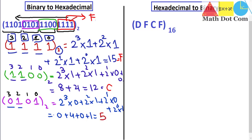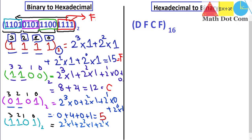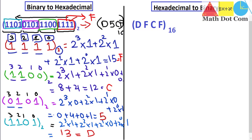Finally, the last group of bits is 1, 1, 0, 1. Again using the same procedure: 2 raised to the power 3 into 1, plus 2 raised to the power 2 into 1, plus 2 raised to the power 1 into 0, plus 2 raised to the power 0 into 1. This gives 13, and in hexadecimal 13 is equal to D. So we have got the hexadecimal equivalent of this binary number, which is D5CF.